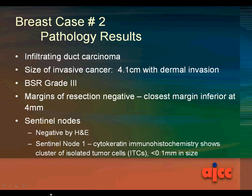The pathology results: infiltrating duct carcinoma. The size of the invasive cancer is 4.1 centimeters with dermal invasion. Bloom-Scarf-Richardson grade 3. Margins of resection were negative — the closest margin, inferior, at 4 millimeters. The sentinel nodes were negative by H&E; however, sentinel node 1, cytokeratin immunohistochemistry, shows a cluster of isolated tumor cells (ITCs) less than 0.1 millimeter in size.